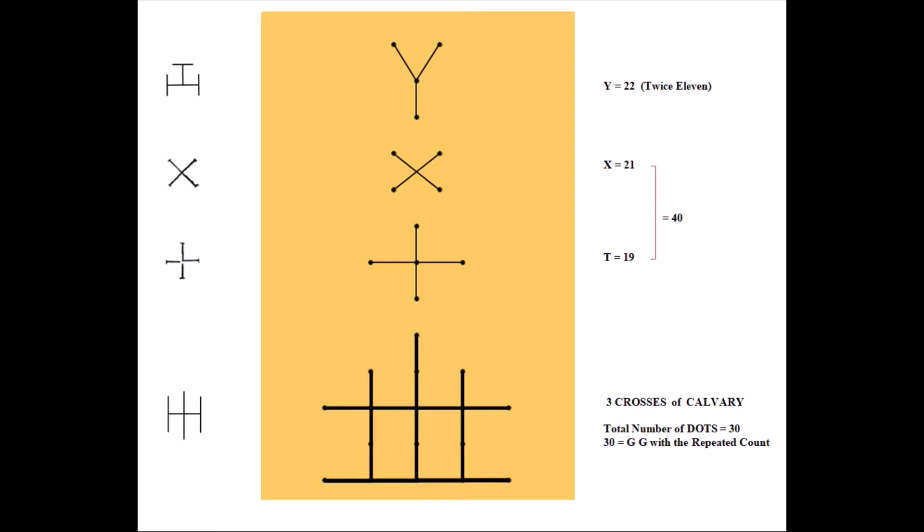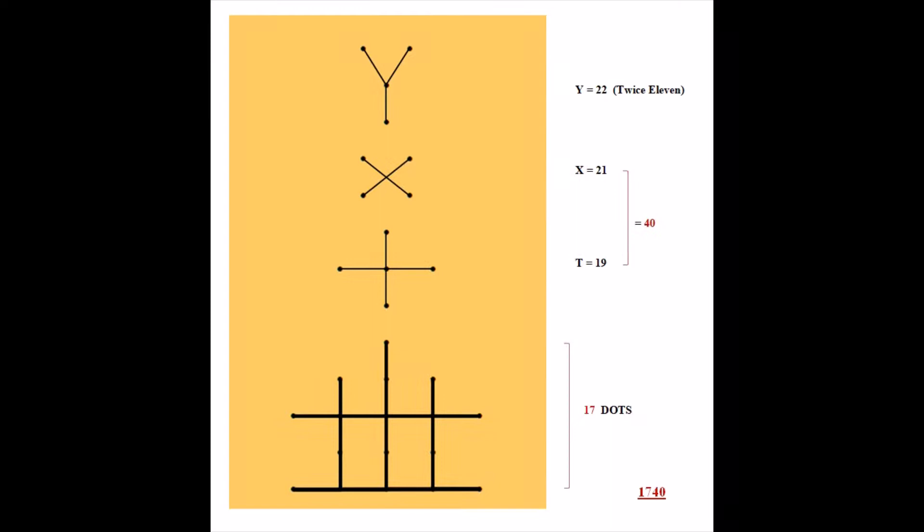And here, the iota-edac symbol is drawn to represent the three crosses of Calvary. There's 30 dots total, and 30 equals GG, or God and Jesus, with the repeated count.